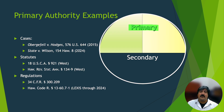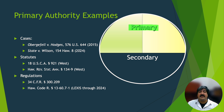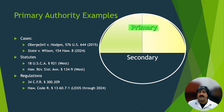Here I've provided examples of primary authority. Primary authority can be created by both state and federal governments. For cases, we have the Obergefell v. Hodges Supreme Court case and the State v. Wilson case from the Supreme Court of Hawaii. In terms of statutes, examples include the United States Code and the Hawaii Revised Statutes. Lastly, for regulations, I provided citations to the Code of Federal Regulations as well as the Hawaii Administrative Rules.